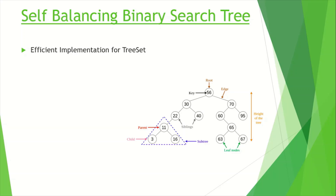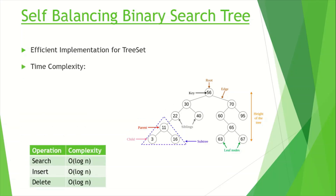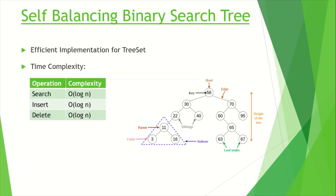The main benefit of using this self-balancing binary search tree is its time complexity. The time complexity for searching, inserting, and deletion is of order log n, which is very efficient. In this image you can see a balanced binary search tree where the root element is present and child elements on the left are less than the root, while child elements on the right are greater. For example, with root 30, the left child is 22 and the right child is 40.